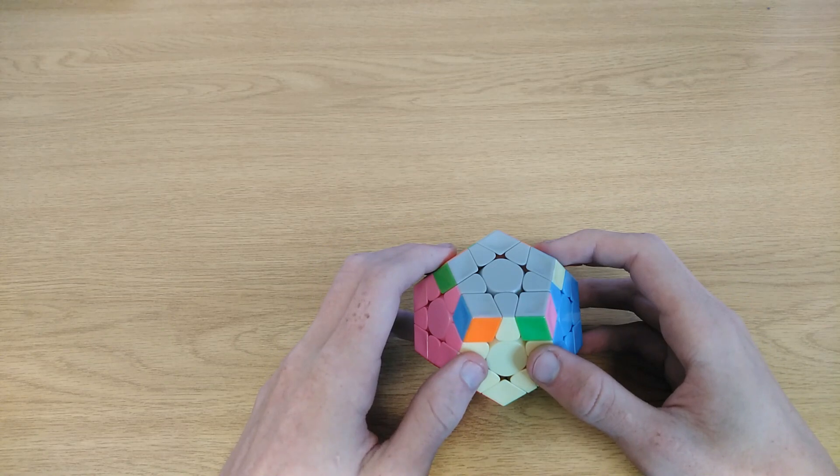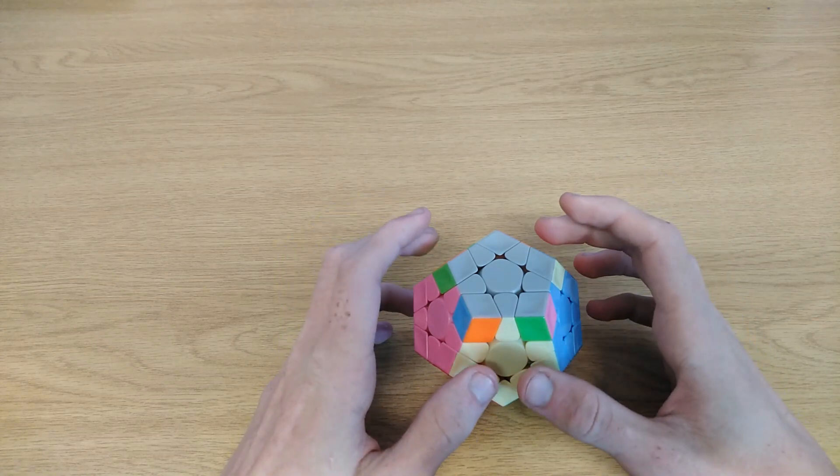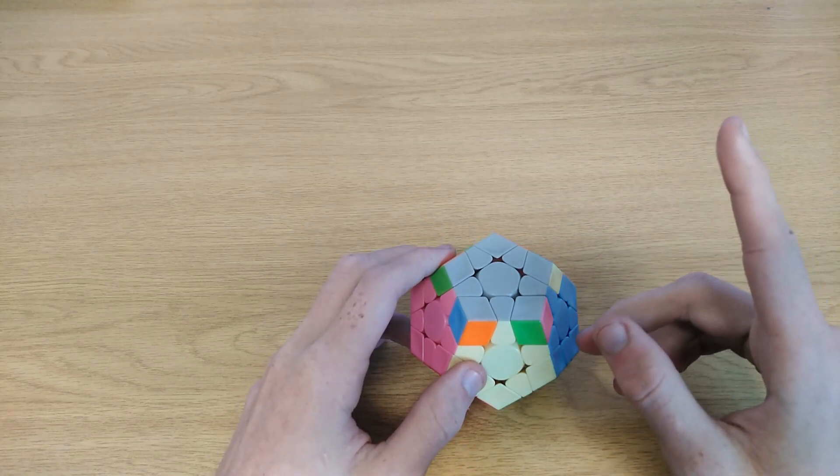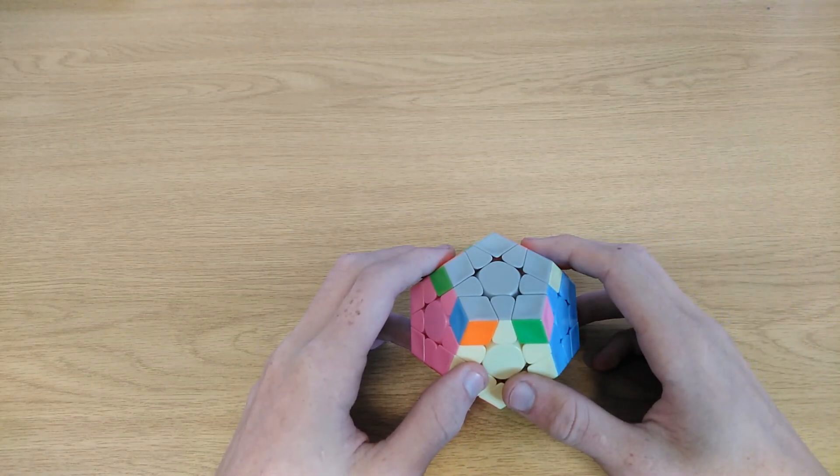In the long run, once you start learning 4-look PLL, you can't still use commutators. So if you are serious about megaminx, learn all these algorithms. Here's a video of me showing all the 2-look PLLs and 2-look OLLs.